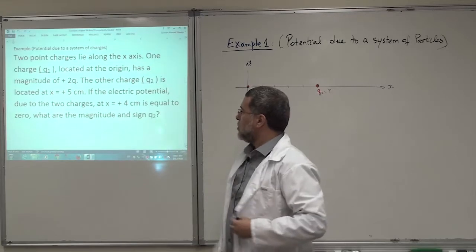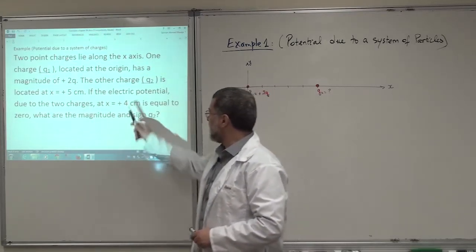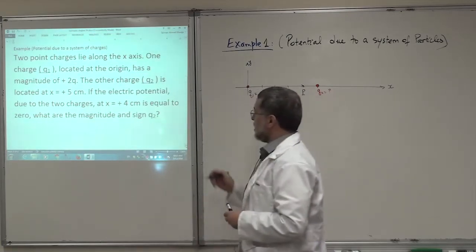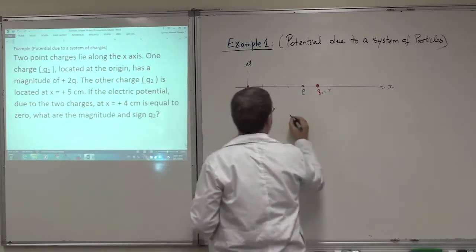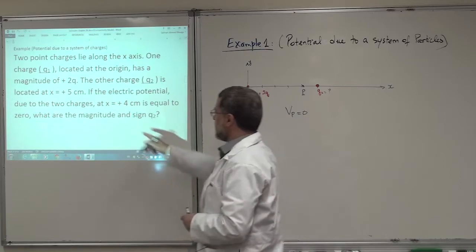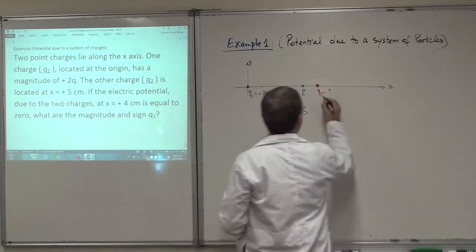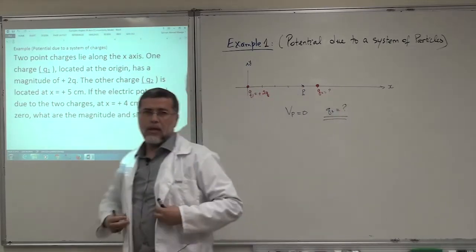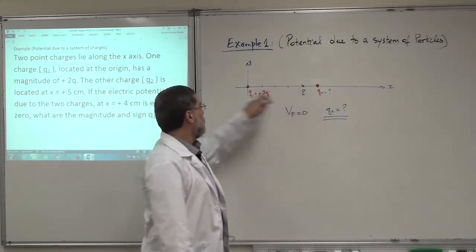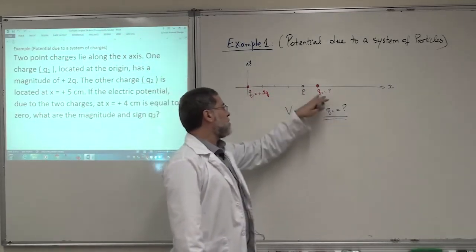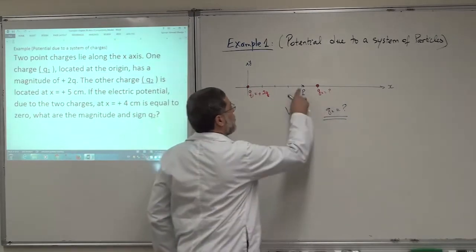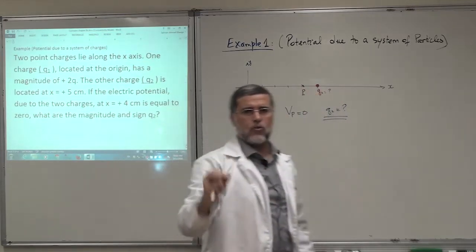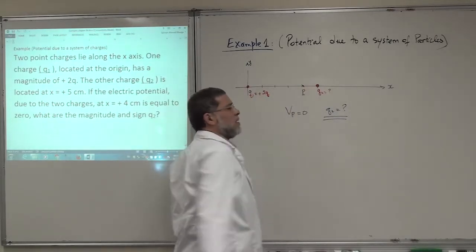Now, if the electric potential due to the two charges at x equals 4 centimeters — that means here at this point P — is equal to zero, the potential there is zero. They want the magnitude and sign of Q2. So he gave you the potential at point P due to the two charges, and asked for the value of Q2 which makes the potential here equal to zero.